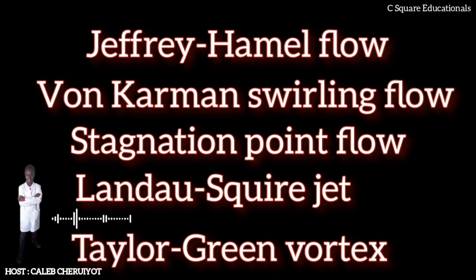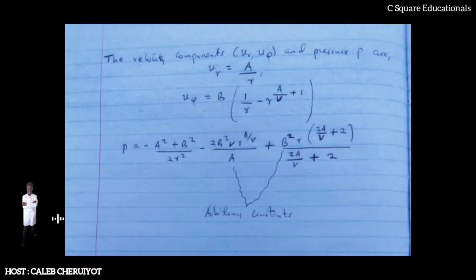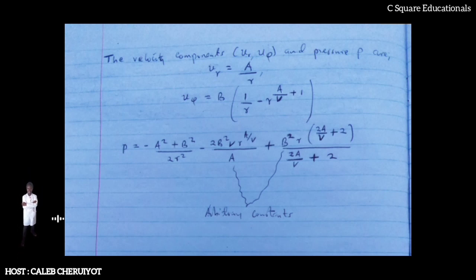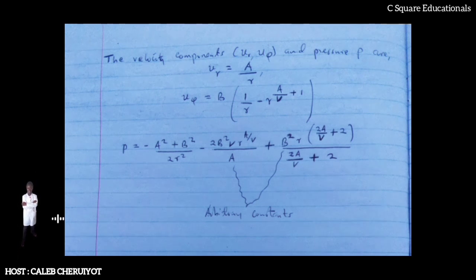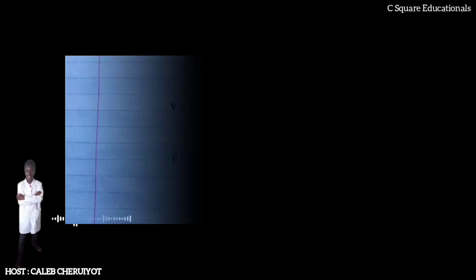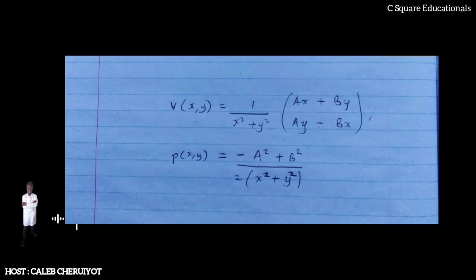Under additional assumptions the component equations can be separated. For example, in the case of an unbounded planar domain with two-dimensionally incompressible and stationary flow in polar coordinates, the velocity components U_r and U_φ and pressure P are expressed where N and B are arbitrary constants. The solution is valid in the domain r ≥ 1 and for A < −2ν. In Cartesian coordinates when viscosity is zero (ν = 0), a three-dimensional example is available.